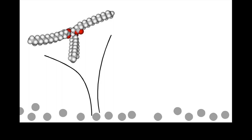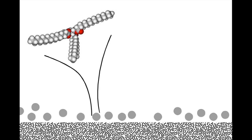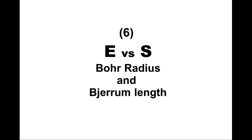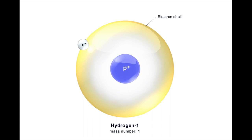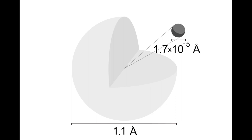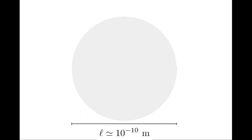The simple length we turn to now estimates the size of atoms themselves. The simplest atom is hydrogen, with one proton and one electron. The atom is often depicted as a microscopic solar system, though most details in that drawing are wrong — the proton is much, much smaller than the electron shell. We don't care about the atom's structure, just its size: around one Ångström, that is 10⁻¹⁰ meters. We can ask whether this size can be understood as a simple length.